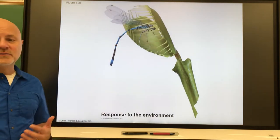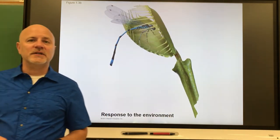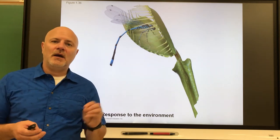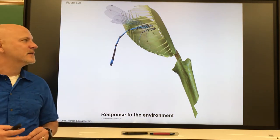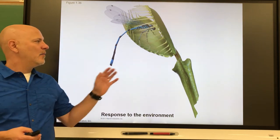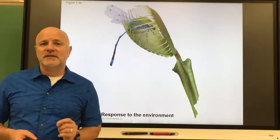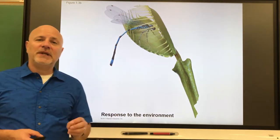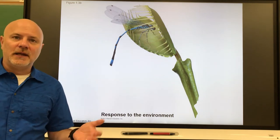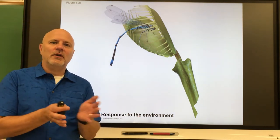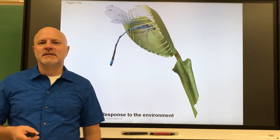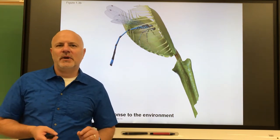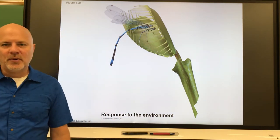All organisms respond to environmental stimuli. Something in the environment provides a stimulus and the organism responds. Most plants don't respond as quickly as the Venus flytrap shown here catching a damselfly, but plants will grow toward sunlight. With animals, we can see responses much faster.